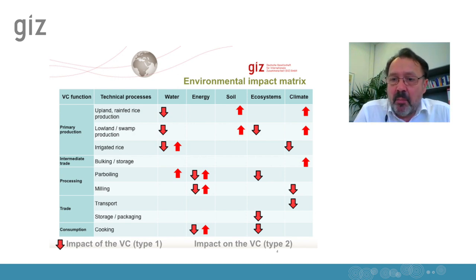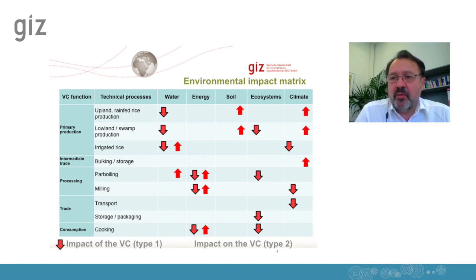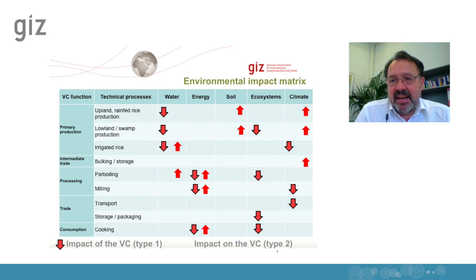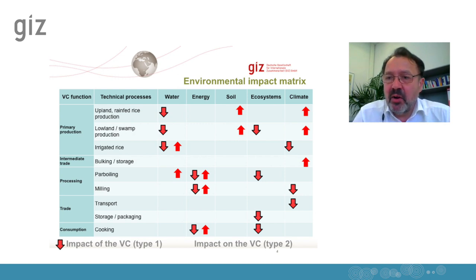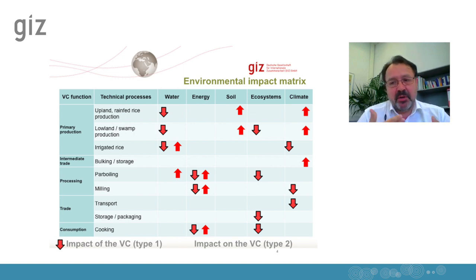Then we set up a matrix and compare the value chain functions and technical processes with five different categories of resources and environmental issues: water, energy, soil, ecosystems and the climate. In this matrix, we show two different kinds of impacts. The arrow going down represents the impact of the value chain on the environment — the type one we discussed earlier. We also show the impact of the environment on the value chain.